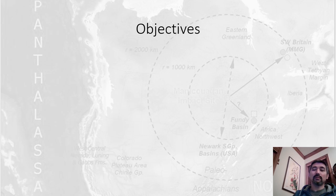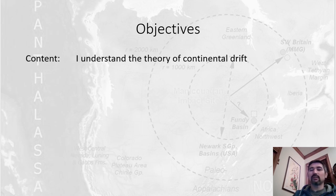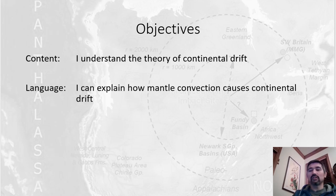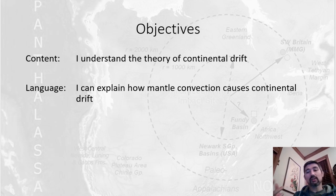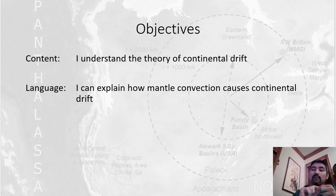Let's look at our objectives for today. The content objective is very simple: I want you to be able to understand the theory of continental drift. The language objective is I want you to be able to explain how mantle convection causes continental drift. Today we've got a new piece of information — continental drift — and I want you to connect this to what you learned last time: mantle convection.